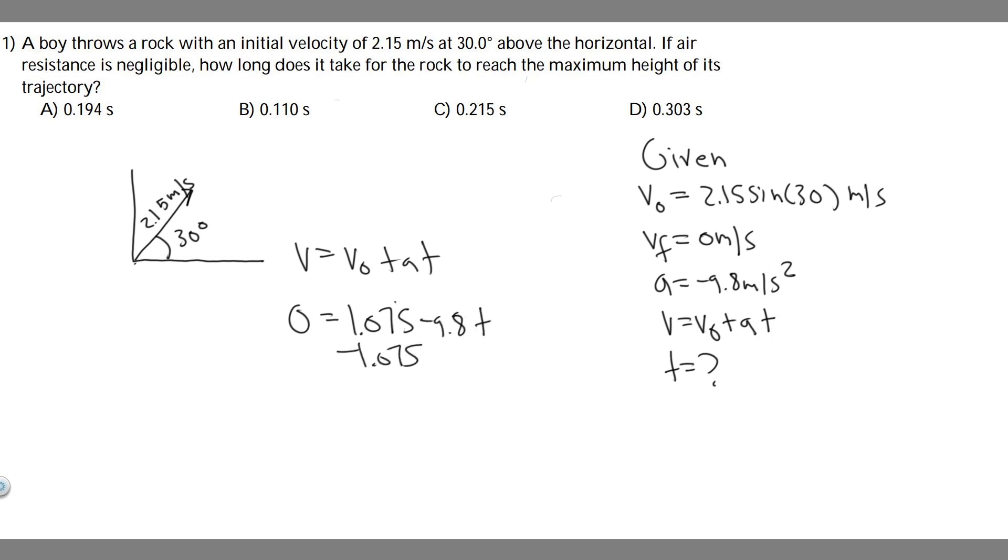Solve for t by moving this to the other side. You get -1.075 = -9.8t. Divide by -9.8.